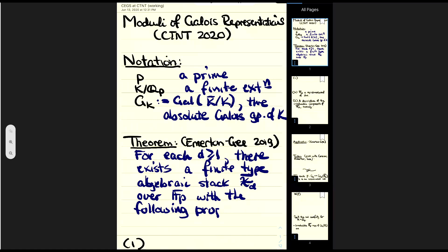Before I go any further, for those of you who might be recoiling at the use of the word 'stack' here: for the purposes of this talk, you really don't need to know anything about stacks. All you need to know is that when I say 'finite type algebraic stack,' the words 'algebraic' and 'finite type' are making this thing an object of algebraic geometry. So while it's not a variety, you won't go wrong imagining it as some kind of generalization of a variety.